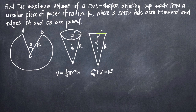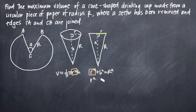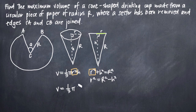Now we need to solve this constraint equation for one of the other variables, then plug the value back into the volume equation. We notice that we have r squared in both our volume equation and our constraint equation, so it would be convenient to solve for lowercase r squared. We subtract h squared from both sides to get lowercase r squared equals capital R squared minus h squared. We then plug that into the volume equation to get volume equals one-third pi times (capital R squared minus h squared) times h.